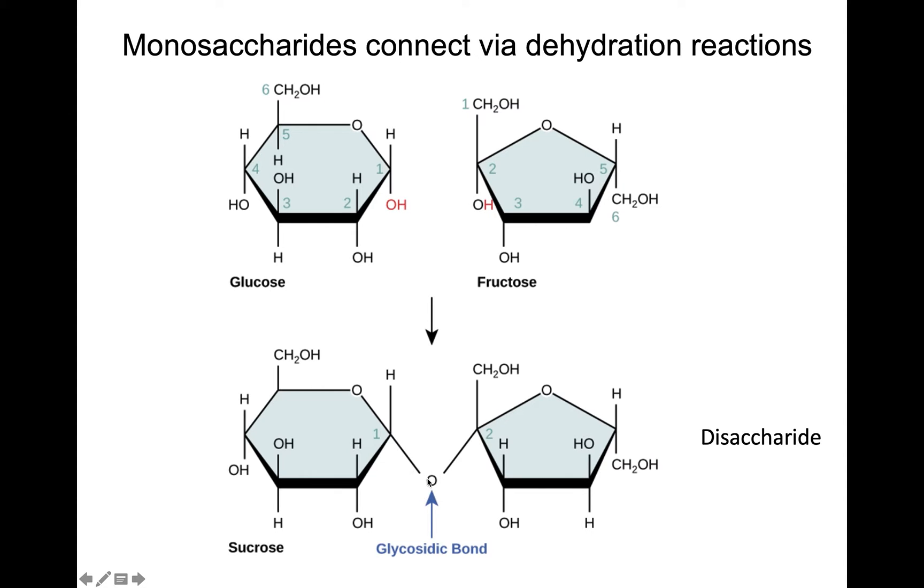A covalent bond is formed between these two carbohydrate molecules, which we call the glycosidic bond. So then these two monosaccharides now form a disaccharide. Di means two. We have two monosaccharides and makes a disaccharide. So we're attaching glucose and fructose together. We get sucrose, which is that table sugar that you use to put in your coffee.